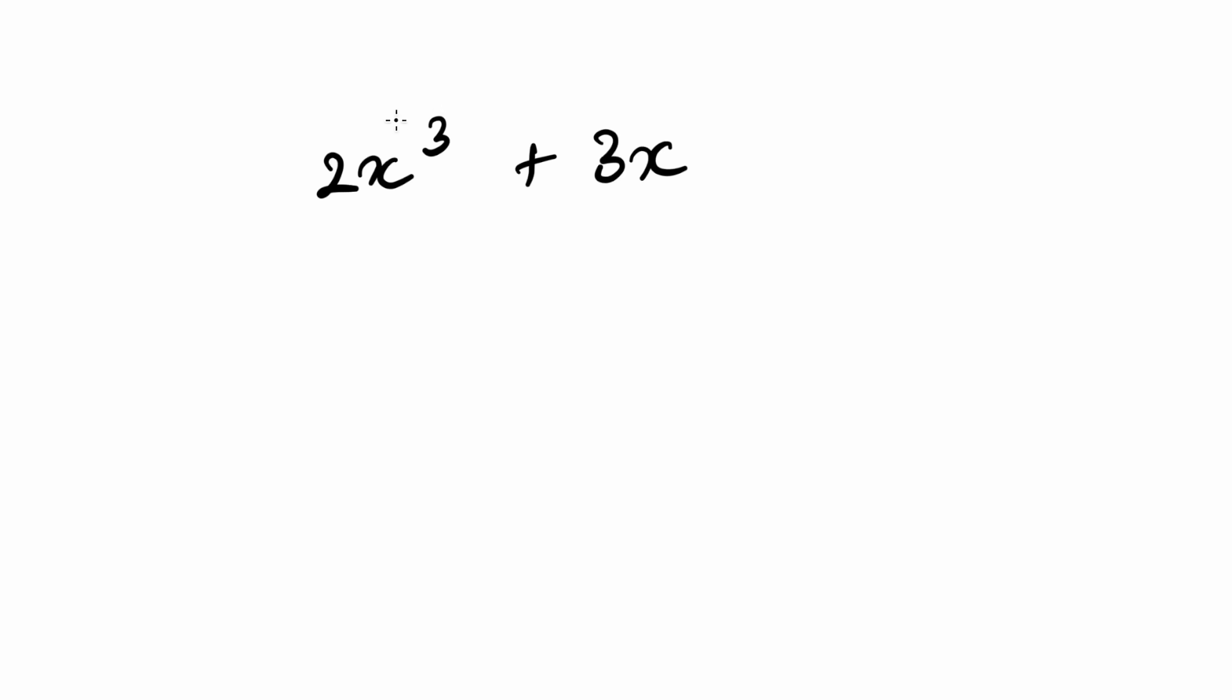For something like this, what you simply do is multiply these two together so that becomes 6x, then you do 3 minus 1 so it becomes squared, and this will just be 3. So this would be the differential or the differentiation of this.